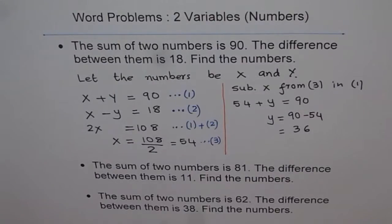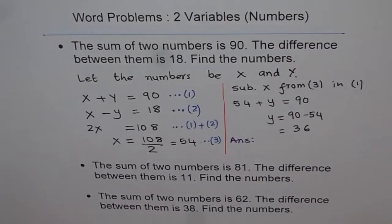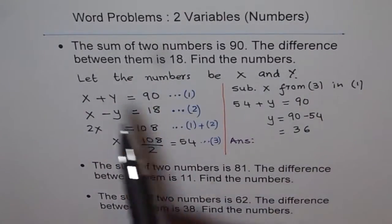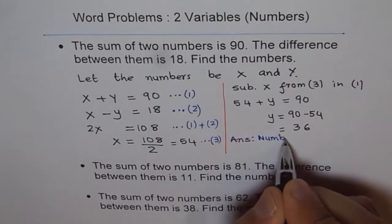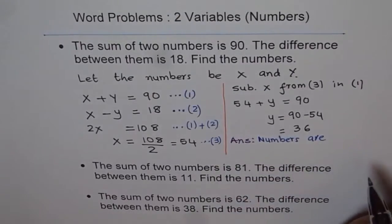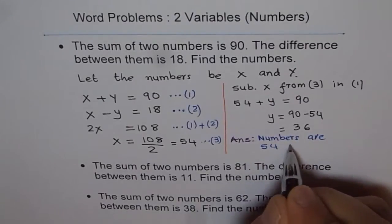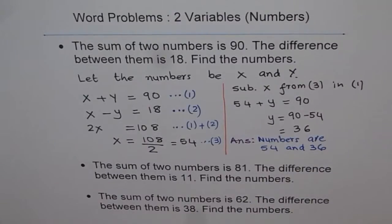You have found answers for both variables. Now it is a good time to write down your answer clearly. Read the question once again — it says find the numbers. The numbers are X equals 54 and Y equals 36. It is always a good idea to check your answer as well.